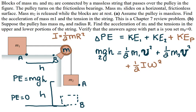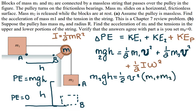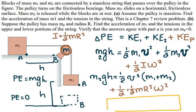Plugging everything into the energy equation: M2gH equals one-half v squared times (M1 plus M2) plus one-half times one-half MR squared times omega squared. Using the relationship that tangential velocity equals R times omega, we can replace R times omega with v, so R squared omega squared becomes v squared.